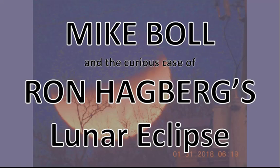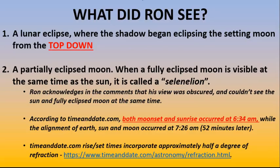His main piece of evidence is from Ron Hagberg over in Florida and the footage he captured of a lunar eclipse back in January 2018. So what did Ron actually see? First of all, he captured the lunar eclipse where the shadow began eclipsing the moon from the top down rather than from the bottom up, which most flat earthers seem to think should happen.